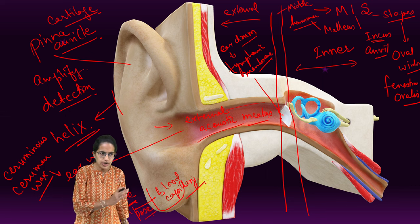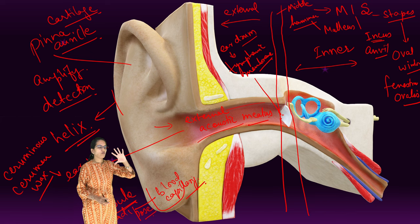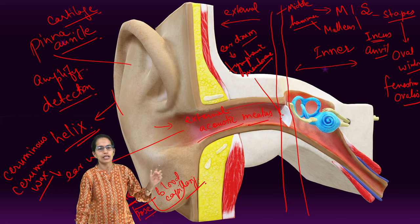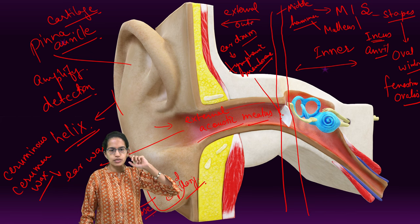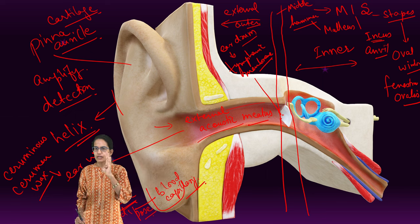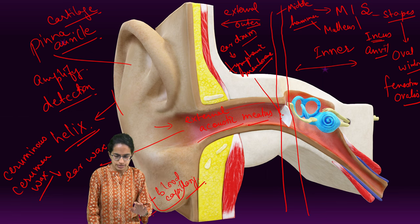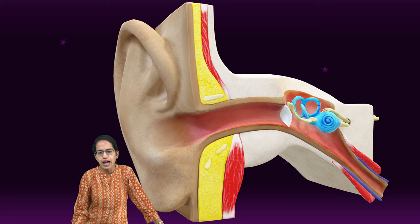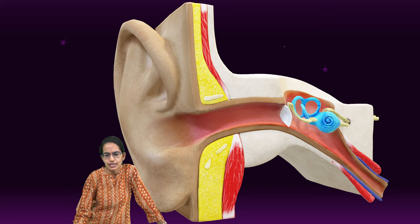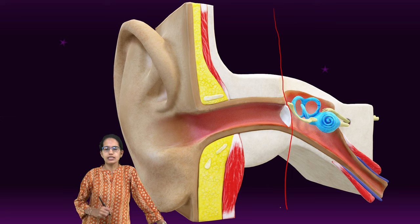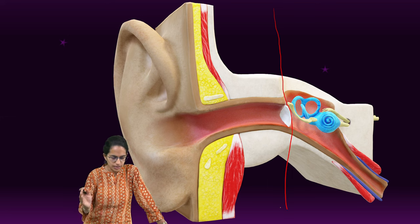So we have understood the structure of the outer ear — what we call the external ear, which is visible to us — and then the middle ear, made up of three bones. Now I will remove that section and focus on the inner ear. Beyond this is the inner ear.